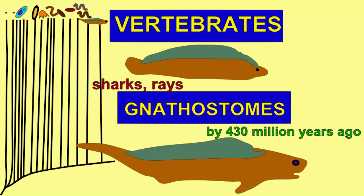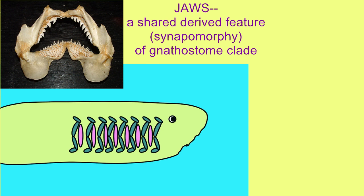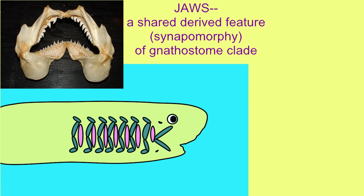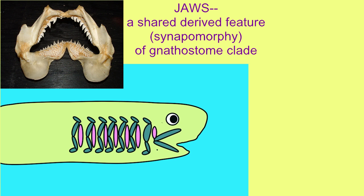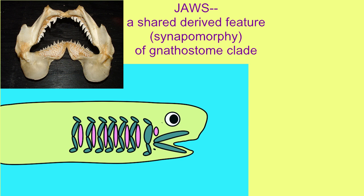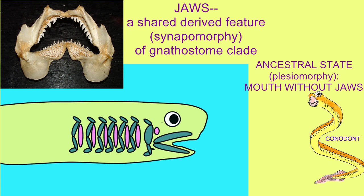These shared derived features are known as synapomorphies. This derived feature of jaws is significant, since the ancestral state, or plesiomorphy, is a jawless condition.